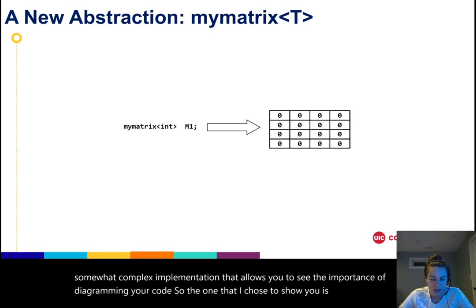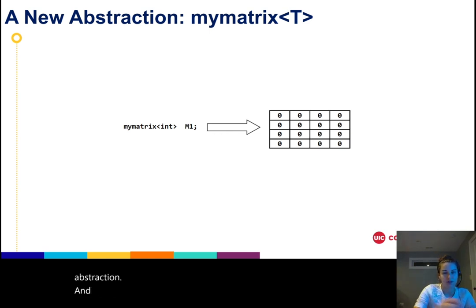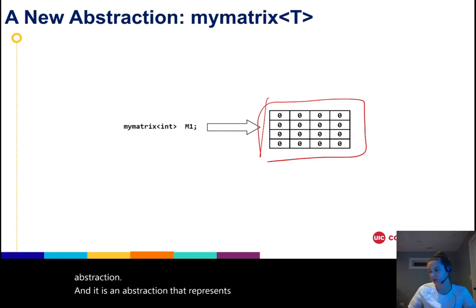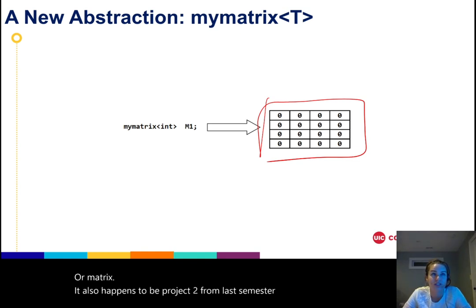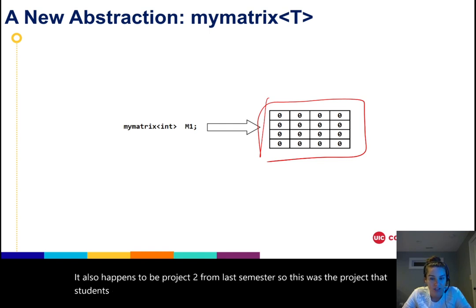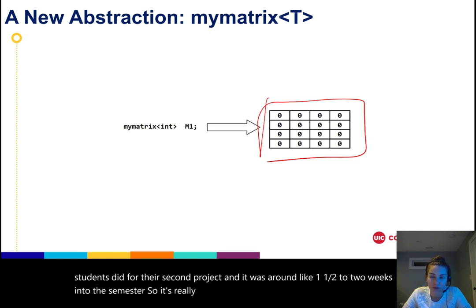So the one that I chose to show you is a mymatrix abstraction, and it is an abstraction that represents a 2D array or a 2D grid or matrix. It also happens to be project 2 from last semester, so this was the project that students did around one and a half to two weeks into the semester, so it's really not a straightforward implementation and I'm going to explain it to you.